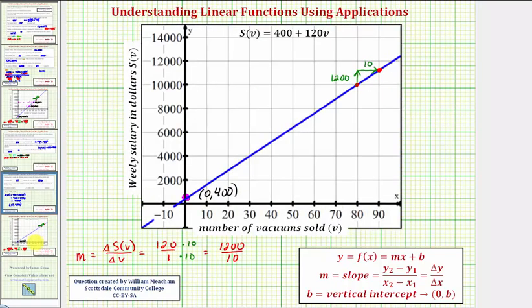Looking at this graphically, we just found this point here, which has coordinates (37, 4840). If he sells 37 vacuums, he'll make 4,840 dollars for the week.